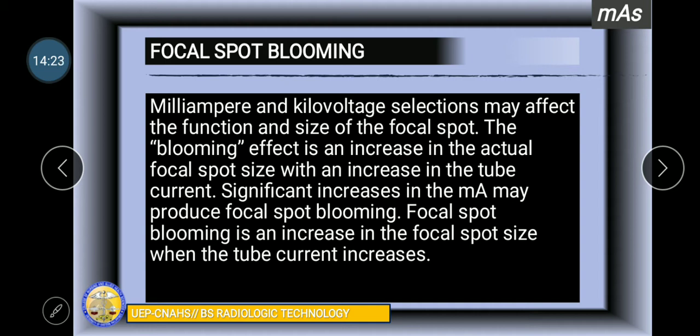It is important to understand that an increase in MA does not affect the energy of photons produced at the target. The purpose of increasing MA is to increase the number of electrons available to travel from the cathode to the anode, resulting in producing more photons. Now we have the term focal spot blooming.